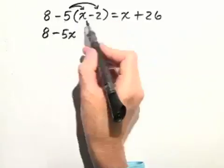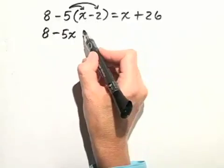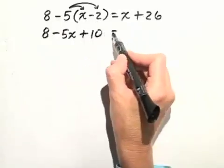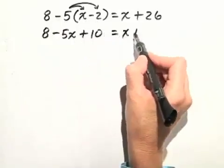And then we have negative 5 times negative 2, which will give us positive 10, equals x plus 26.